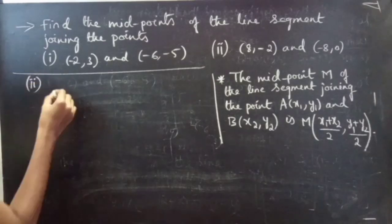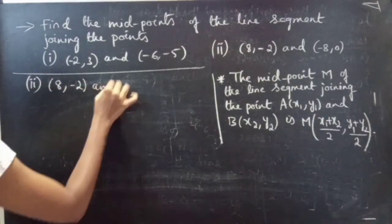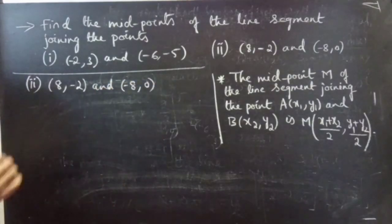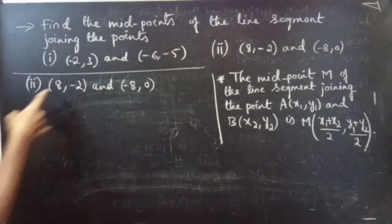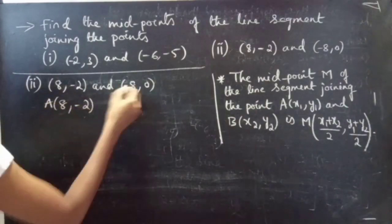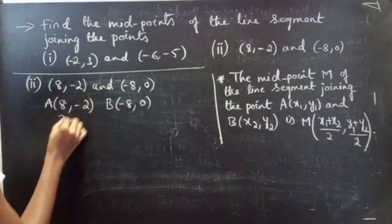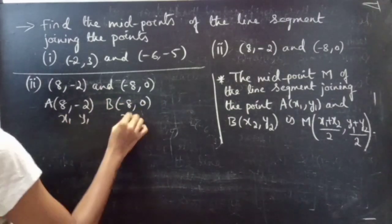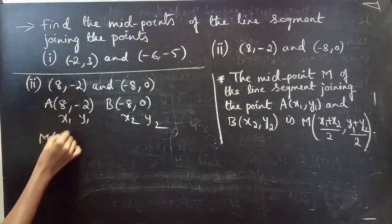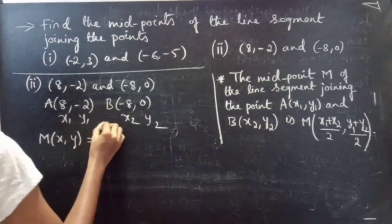Now coming to the second problem: points 8 comma minus 2 and minus 8 comma 0. We have to find the midpoint here. Let the first point be A and the second point be B, with coordinates X1, Y1 and X2, Y2 respectively. We are going to find the midpoint of the line segment joining these two points.